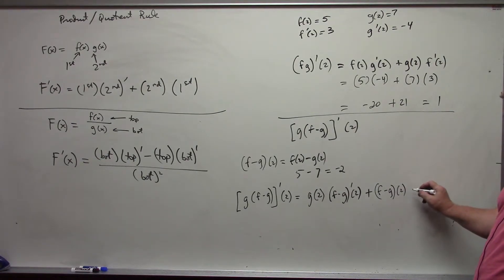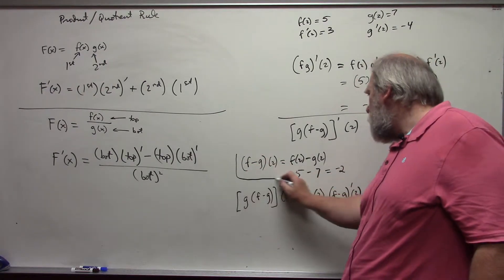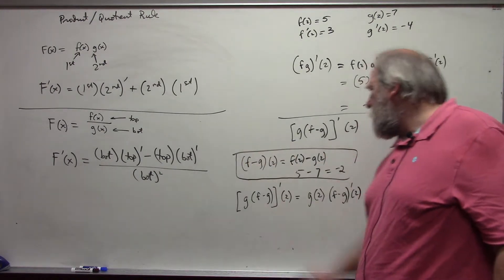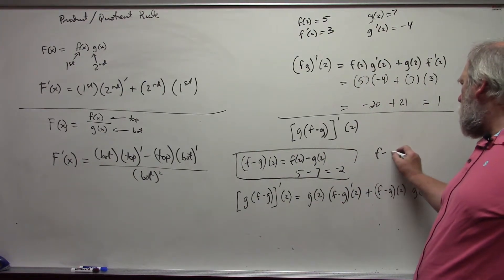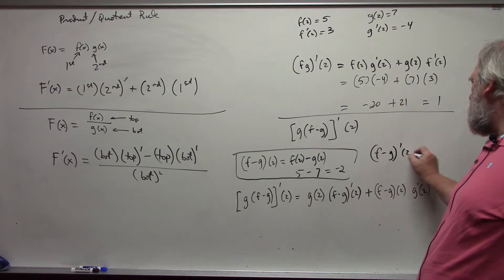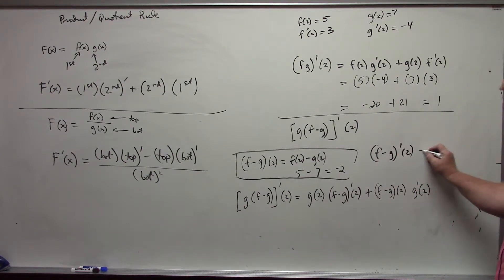g prime of 2. This is my functional value at 2, I need the derivative, f minus g prime at 2. Again, we can just break this apart. This is f prime at 2 minus g prime at 2. f prime at 2 is 3, g prime at 2 is negative 4, and so this value comes out to be 7.